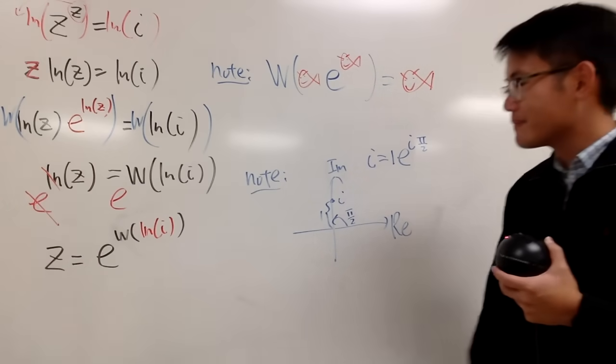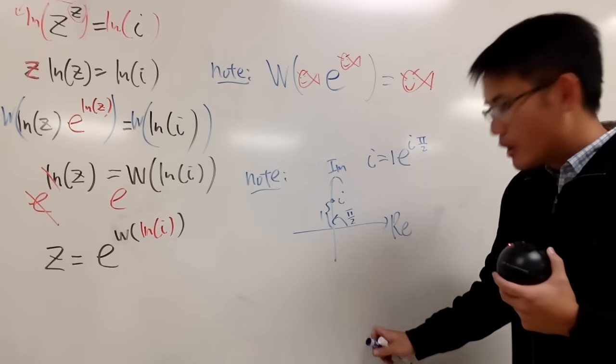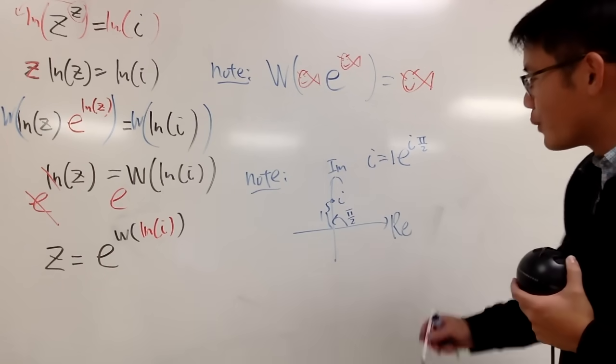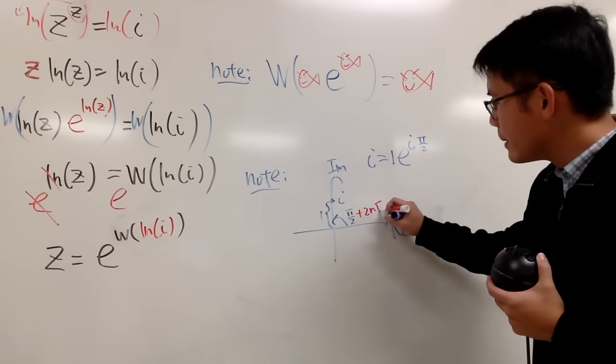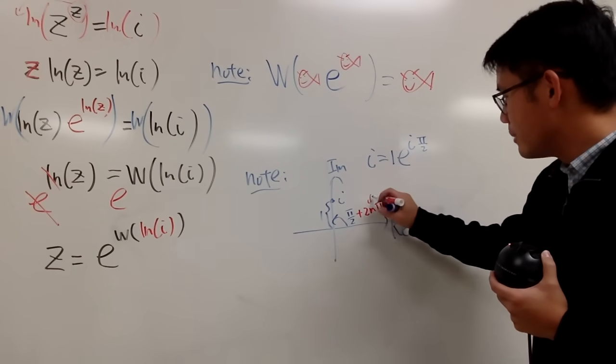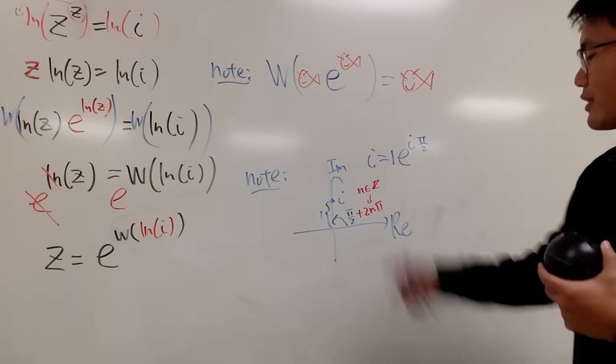However, though, this is not the only angle that you can end up right here. Because you can keep rotating, rotate either this way or the other way. So what you have to do is, you have to add 2nπ, where n is just an integer. So let me just tell you, n belongs to the integers. So you can go either direction.